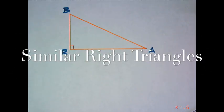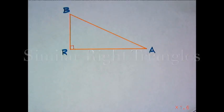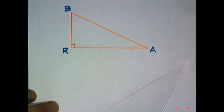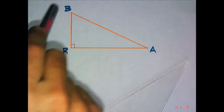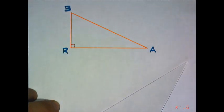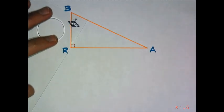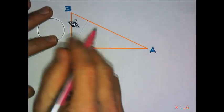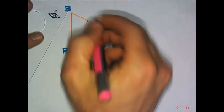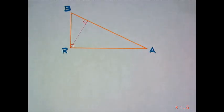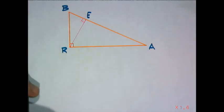Today's lesson is continuing with similar triangles, but focusing on right triangles. As a matter of fact, focusing on one right triangle and splitting it up. So what I'm going to do is, you can see that I have a right triangle here, right triangle BAR. And what I'm going to do is make an altitude to the hypotenuse. By doing so, I have now created three triangles.